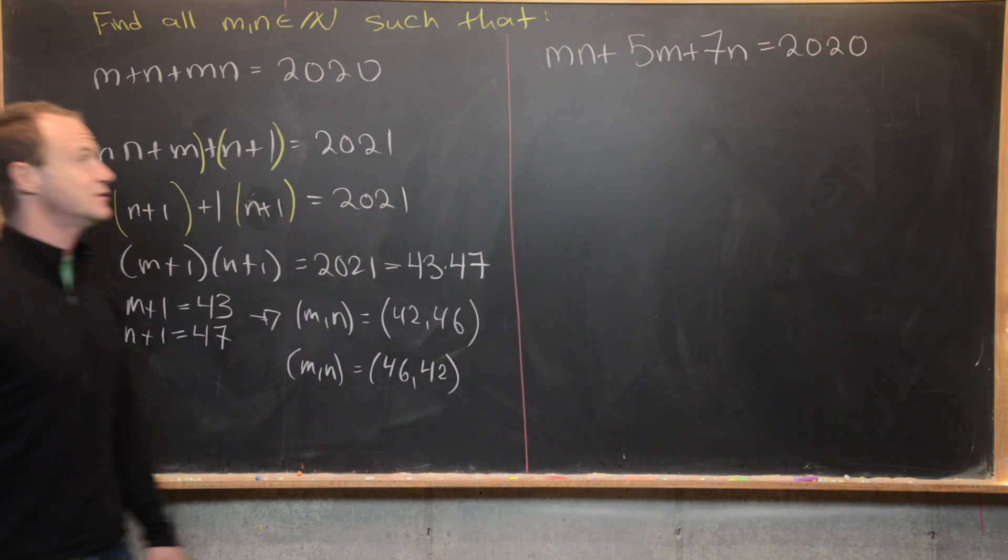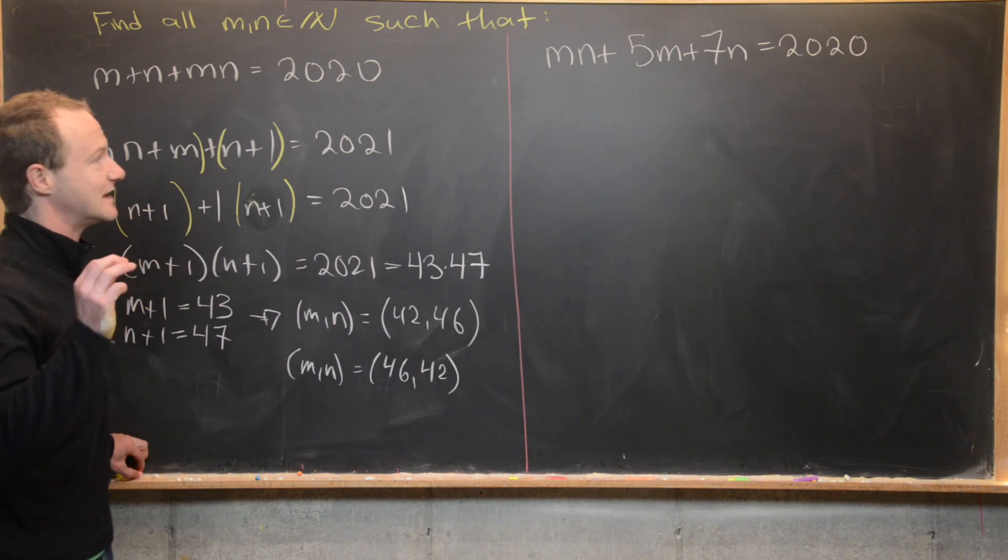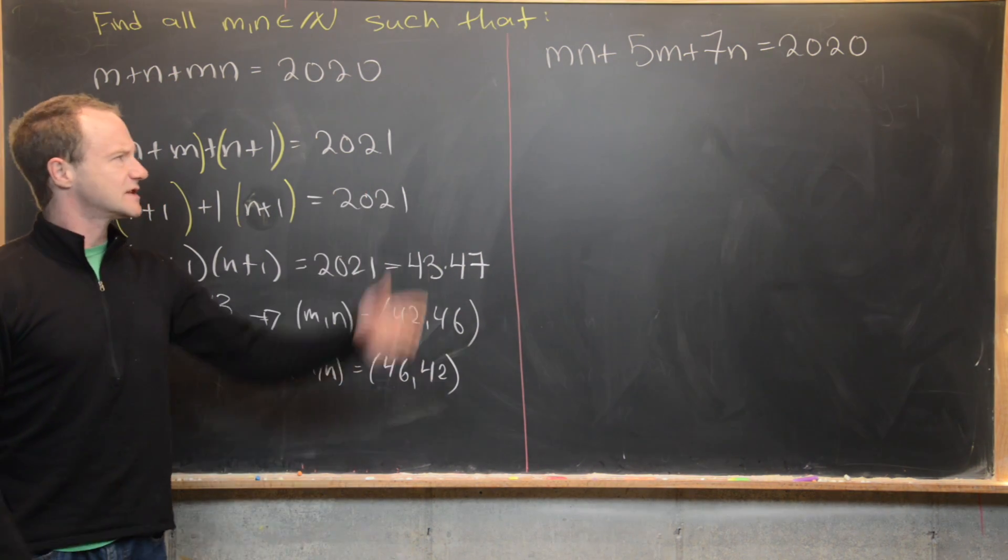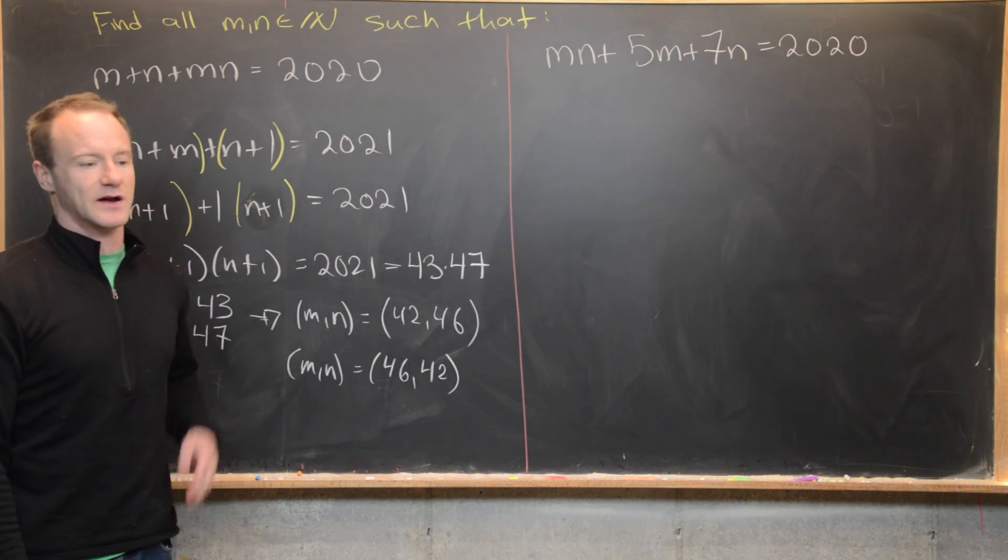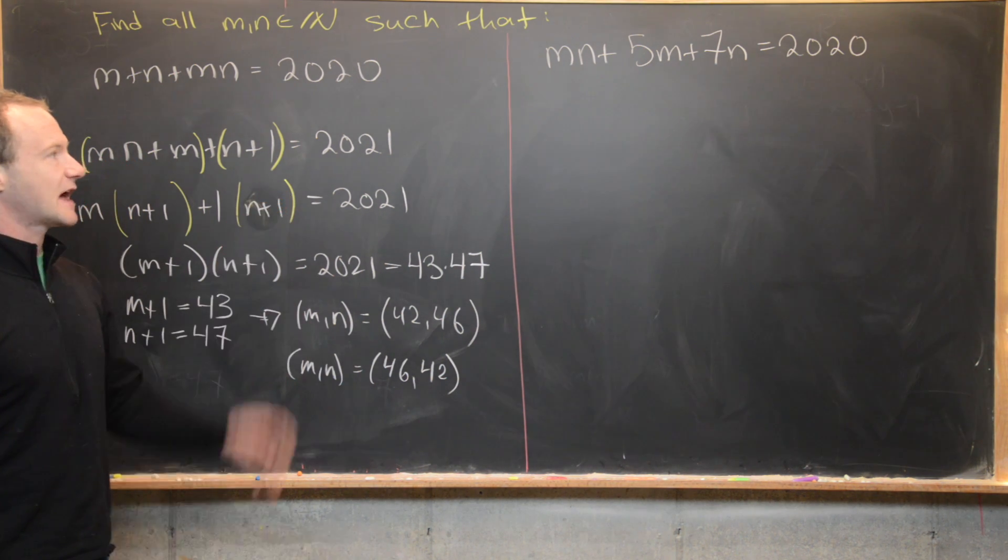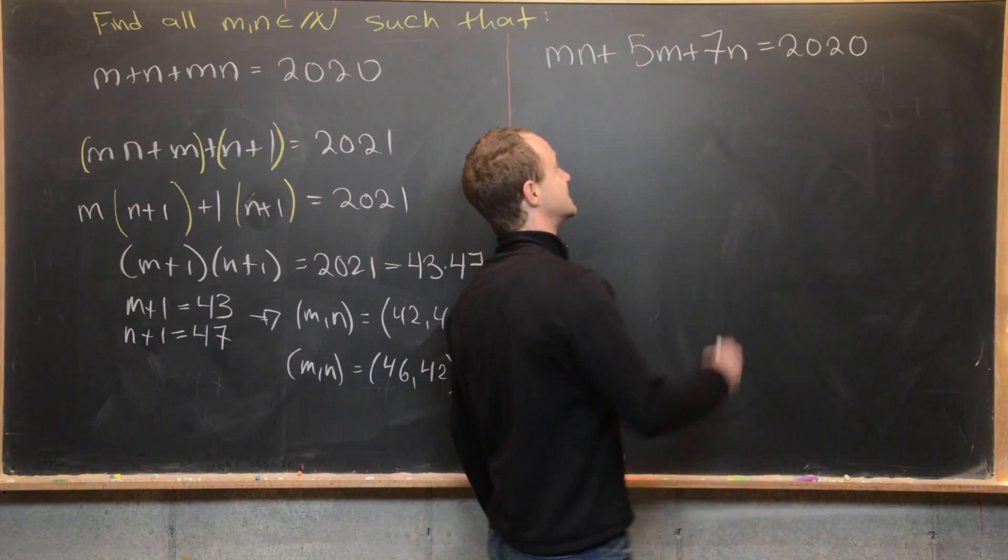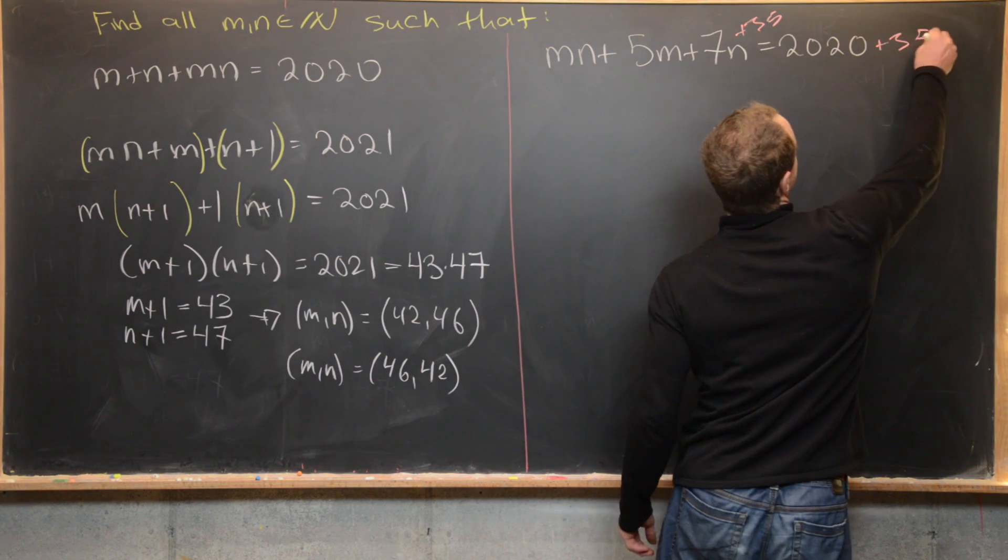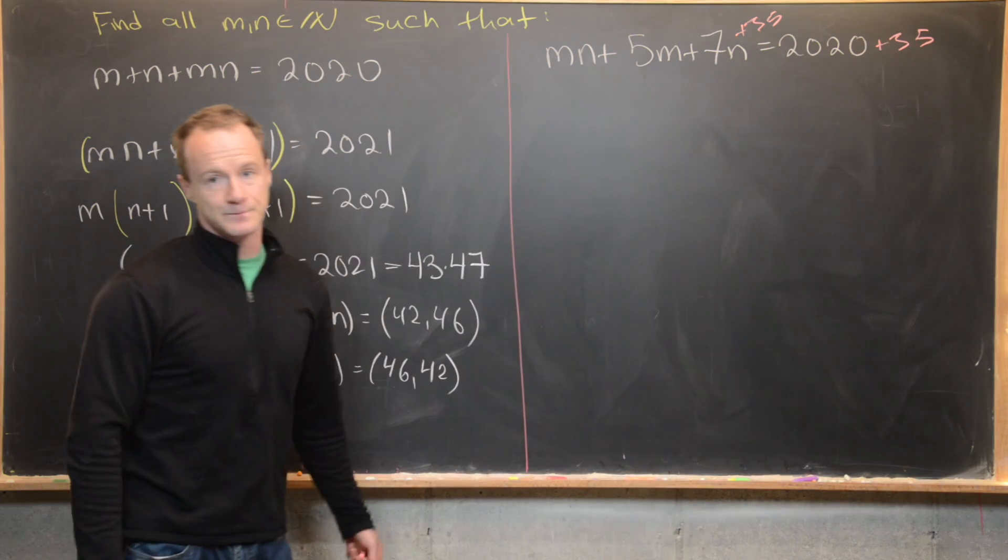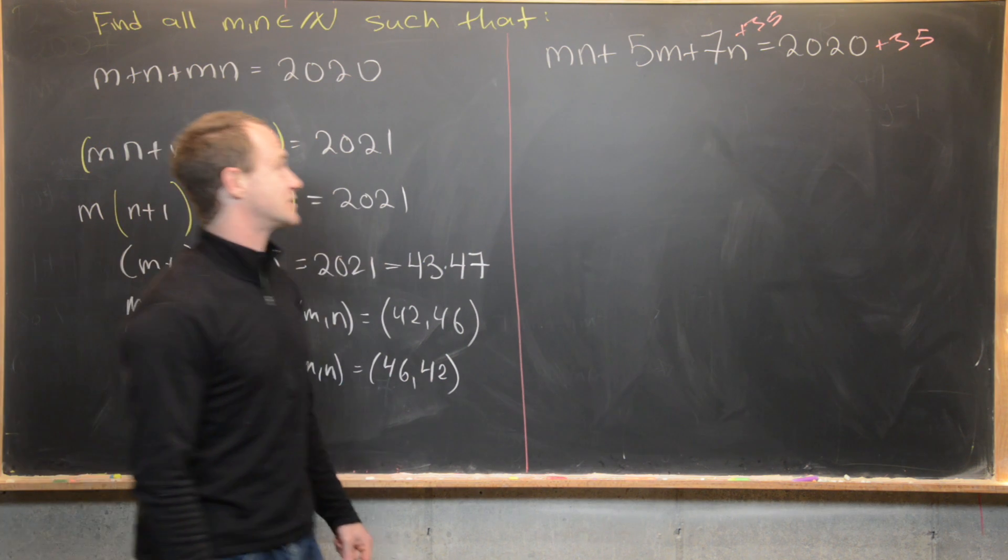Okay, so now let's move on to this next one. We're going to use this same strategy of completing the product. So let's look at this and see what we might have to add to both sides to complete the product here. If you look at it for a little bit, you'll probably see that 35 will work because that's 5 times 7. So let's add 35 here and we'll add 35 here as well.